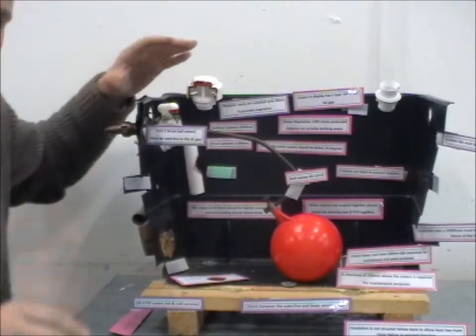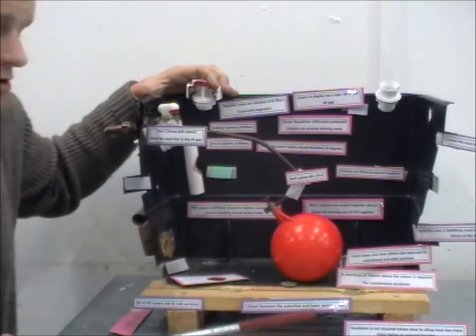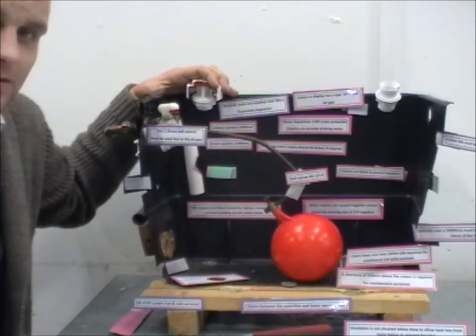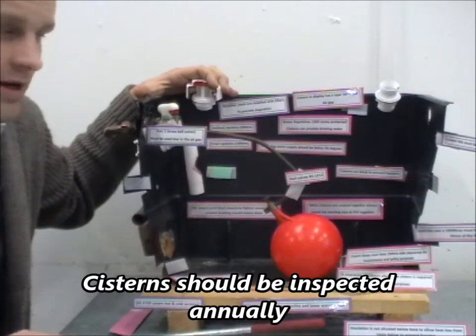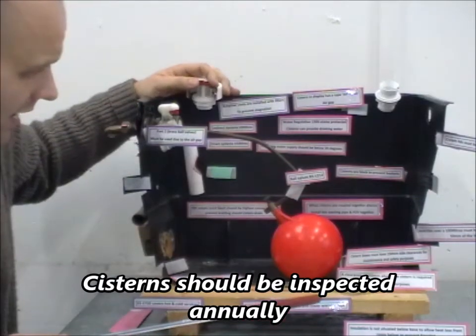Always fit the lid on cisterns because the lid actually strengthens the cistern. It keeps it more robust, keeps it to its shape more. Sometimes old-fashioned circular cisterns, they used to split because they never had the sufficient strength or lid on it.